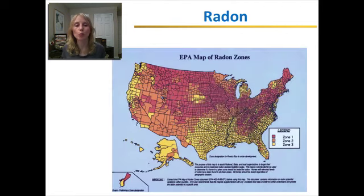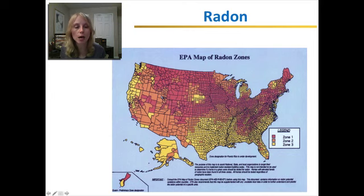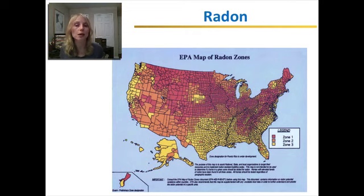One common indoor air pollutant in the developed world is radon — a radioactive gas formed from the decay of uranium, naturally present in certain rocks and soil. The EPA has a map showing which parts of the country have the most radon; zone 1 in red has the most. If you live in one of these zones, it is recommended to get your house checked for radon seeping in through cracks in the foundation, because as a radioactive gas it is a carcinogen and can cause cancer.